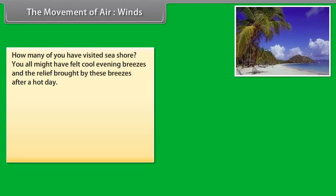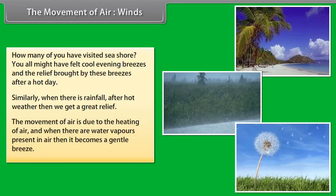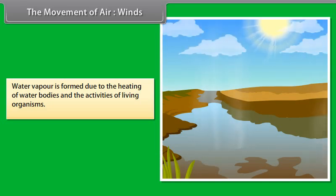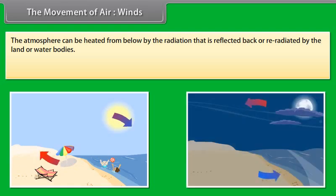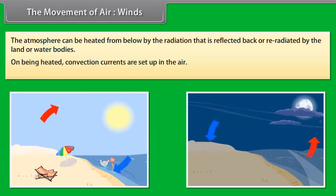The movement of air: winds. How many of you have visited seashore? You all might have felt cool evening breezes and the relief brought by these breezes after a hot day. Similarly, when there is rainfall after hot weather, then we get a great relief. The movement of air is due to the heating of air. And when there are water vapors present in the air, then it becomes a gentle breeze. Water vapor is formed due to the heating of water bodies and the activities of living organisms. The atmosphere can be heated from below by the radiation that is reflected back or re-radiated by the land or water bodies. On being heated, convection currents are set up in the air.